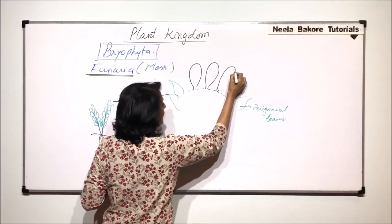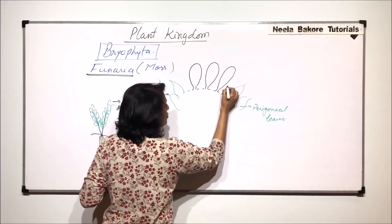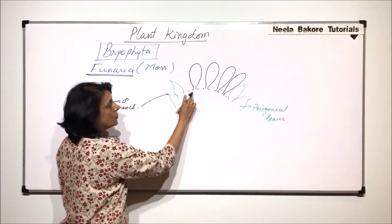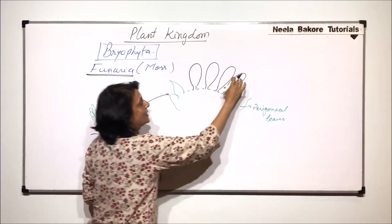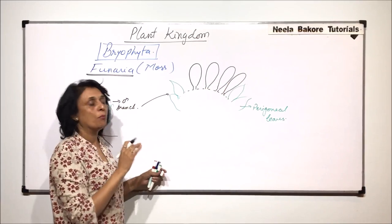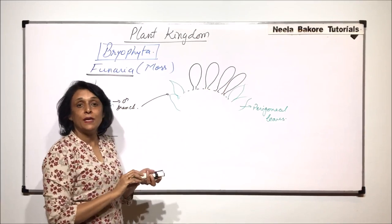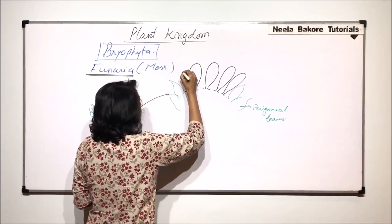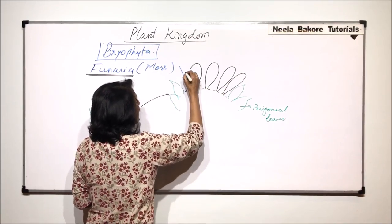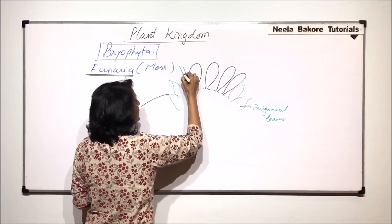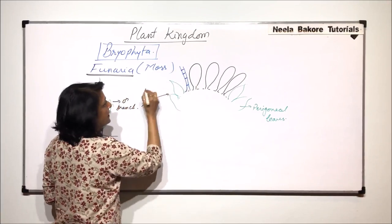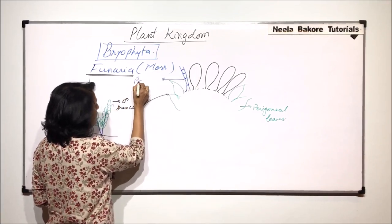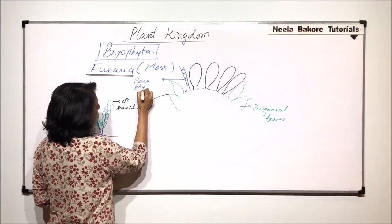Each antheridium has two parts. It has a narrow stalk with which it is attached here and a club-like oval body. In between these antheridia, there are some unbranched multicellular structures. These structures are called paraphysis.